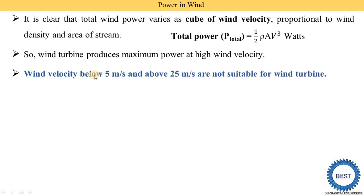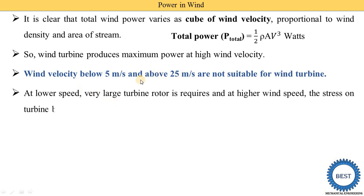Wind velocity below 5 m/s and above 25 m/s is not suitable for a wind turbine. Wind velocity between 5 and 25 m/s is good for windmills. At lower speeds, a very large turbine rotor is required. At higher wind speeds, the stress on turbine blades and shaft is very high. For example, suppose we need to design a windmill for 1 megawatt.